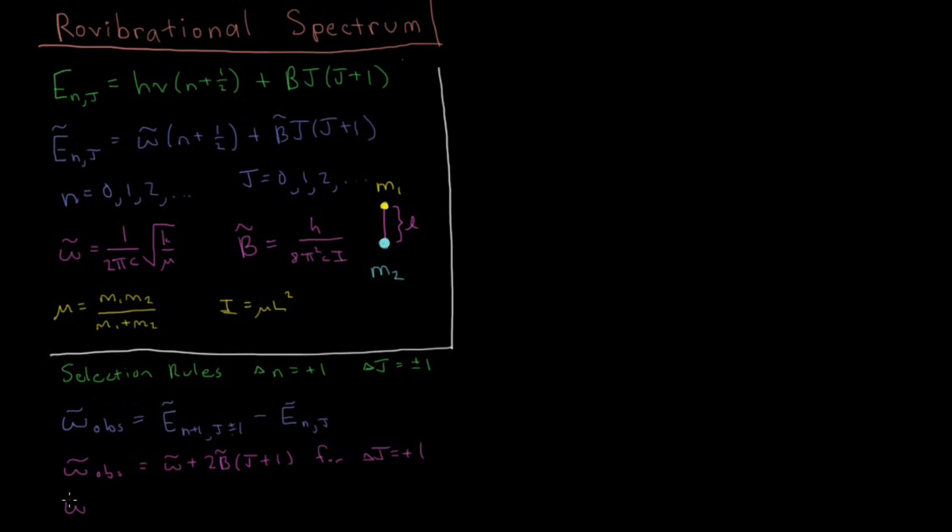And for the other case, where Δj = -1, we're going to have the same ω bar for the increase in n during that absorption, and then minus 2B̄j for Δj = -1.